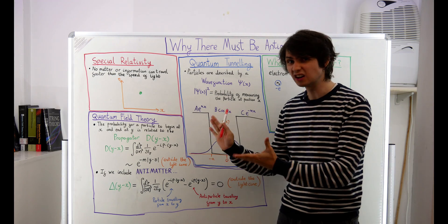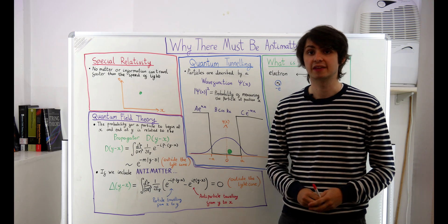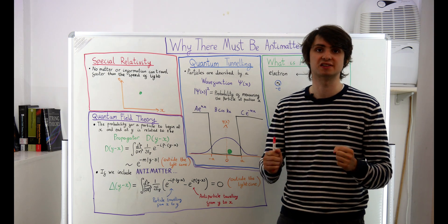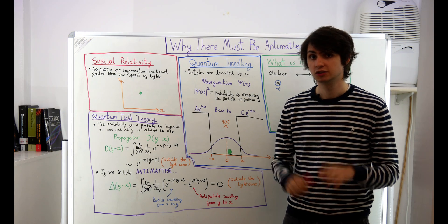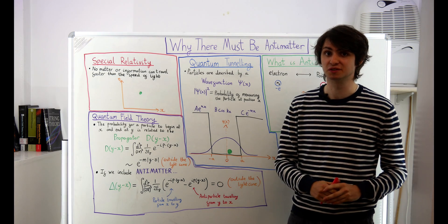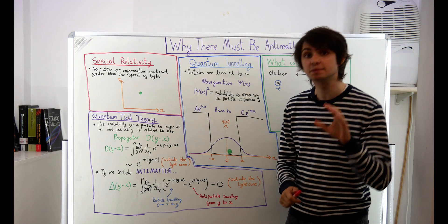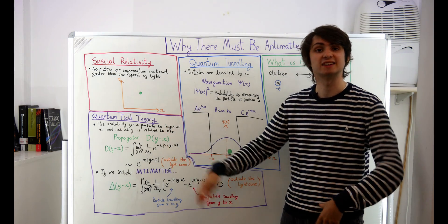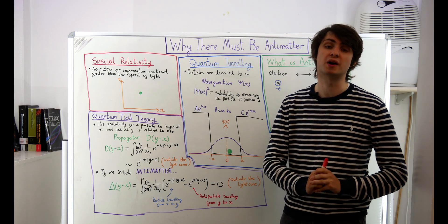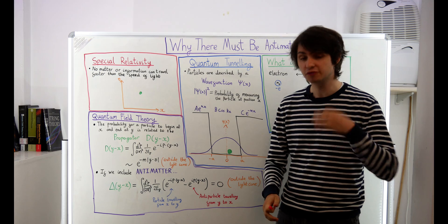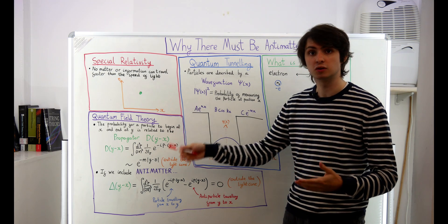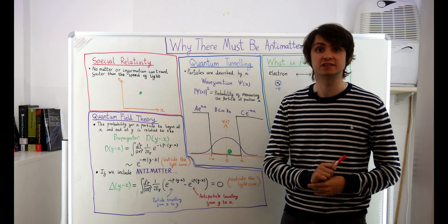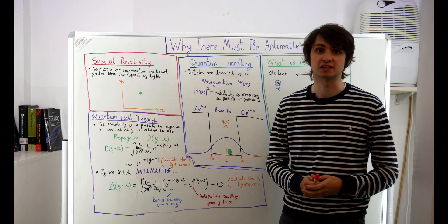But what does quantum tunneling have to do with antimatter? Well in the 1920s we had quantum mechanics and we had general relativity. Two pillars of physics that nobody really knew how to combine. To this day we still haven't fully combined these two fields but we at least know how to combine special relativity with quantum mechanics. This is what we call quantum field theory and is the framework upon which all of modern particle physics is built. During the development of this theory however, physicists had to deal with a lot of problems in combining special relativity and quantum mechanics. One of these problems will lead us to an understanding of why antimatter has to exist.